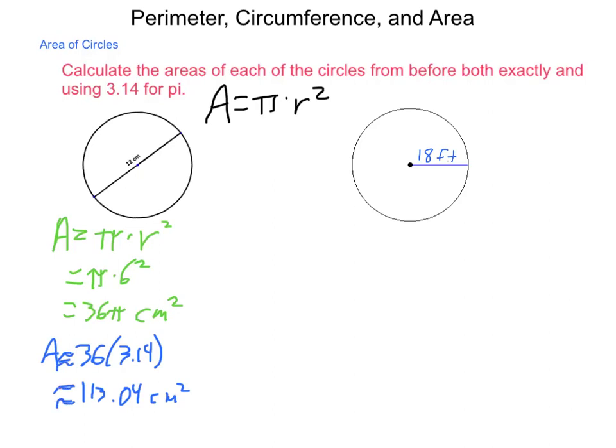Next, let's do the same procedure for the circle on the right. Area, again, is pi r squared. So, that means it's going to be pi times 18 squared. And, going through that calculation, 18 squared is 324. So, this is 324 pi feet squared.